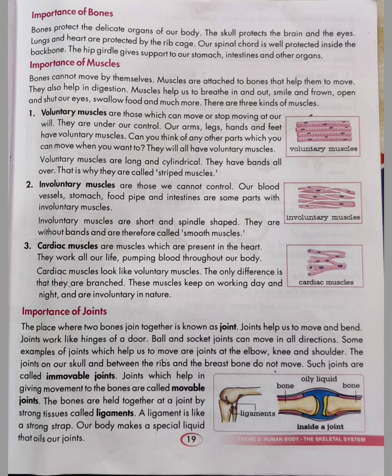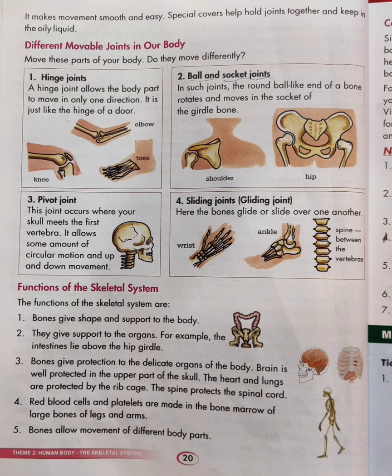The bones are held together at a joint by strong tissues called ligaments — a ligament is like a strong strap. Our body makes a special oily liquid that lubricates our joints, making movement smooth and easy. You can see in the picture the oily liquid inside a joint with two bones attached to it. Special covers help hold joints together and keep the oily liquid in place.